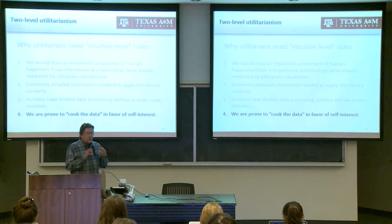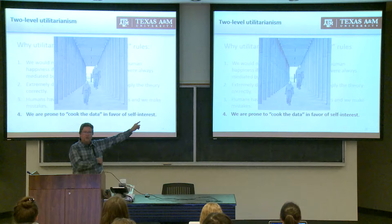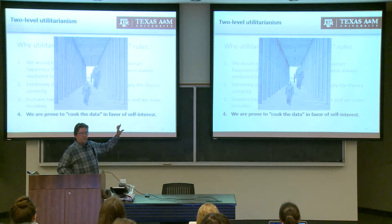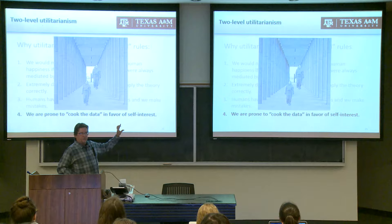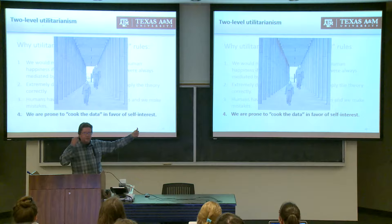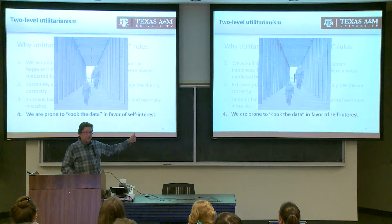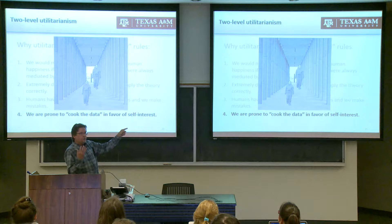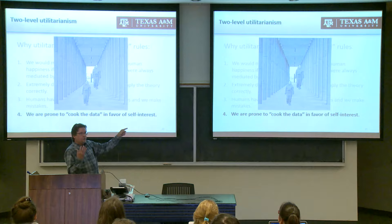The corridor illusion illustrates this well. Your fast-acting intuitive visual system gives you the impression that the upper figure is taller than the bottom figure, but if you measure them they are exactly the same size. Measuring to the millimeter is like explicitly calculating as a utilitarian, but deciding they're the same size doesn't make them look the same size — they still look different to your intuitive visual system. That's how you're supposed to internalize these intuitive-level rules, according to Hare.